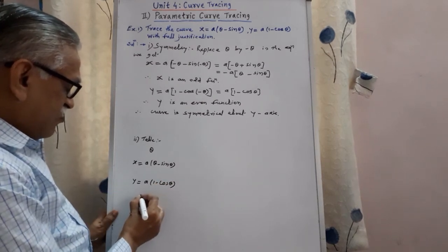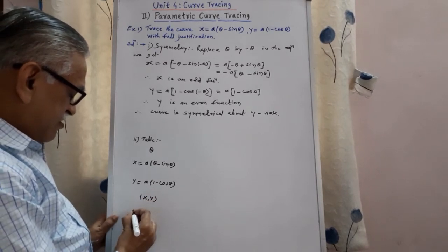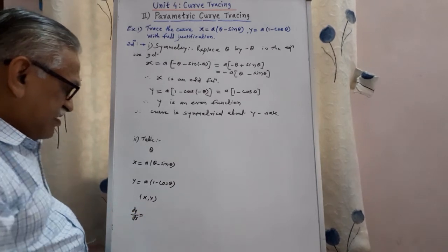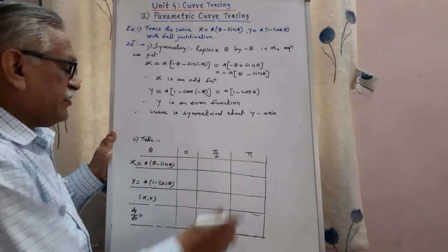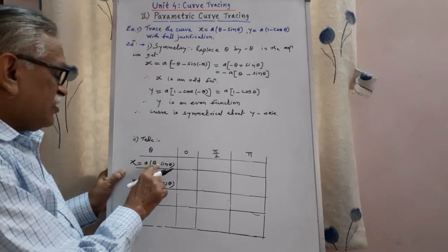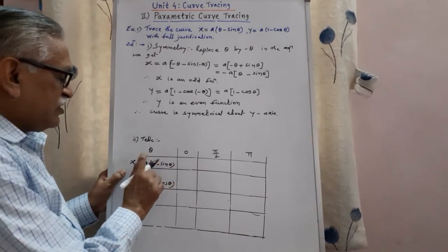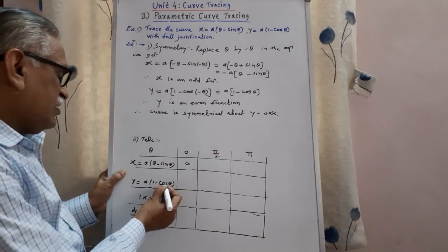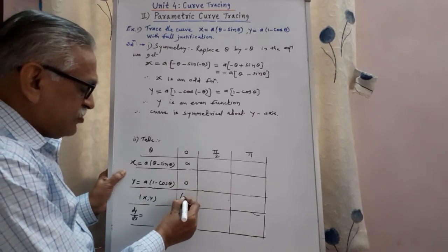point x, y and then value of dy by dx. The values of theta as 0, pi by 2, and pi, and then try to complete the table. When theta is 0, this becomes 0 minus sin 0, sin 0 is 0, therefore x is 0. Cos 0 is 1, 1 minus 1, once again 0, the point is 0, 0.